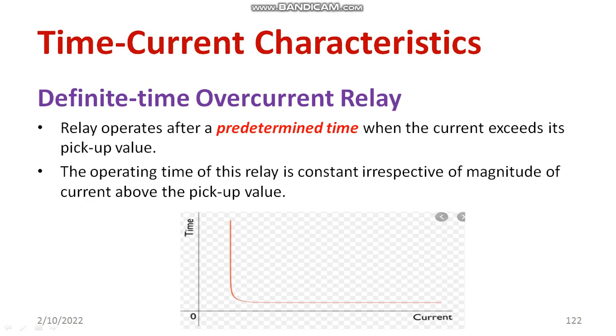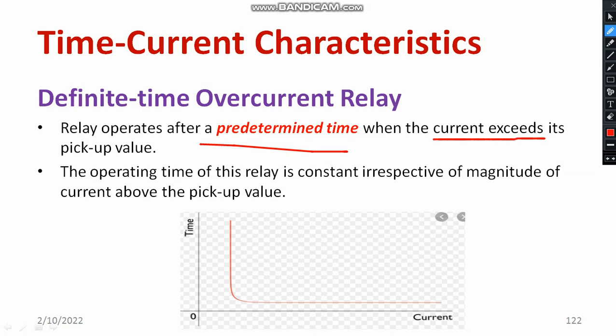Moving on to definite time overcurrent relay — in this case, there will always be a predetermined time, maybe 5 seconds or maybe 10 seconds. Once the load current exceeds its pickup value and once it reaches the predetermined time, the relay operates. But the main issue is poor selectivity. It never differentiates between high fault current and lower fault current. It works based only on that predetermined time and that particular pickup value. The operating time of the relay is constant, irrespective of the magnitude of current. This is the major drawback of definite time overcurrent relay.